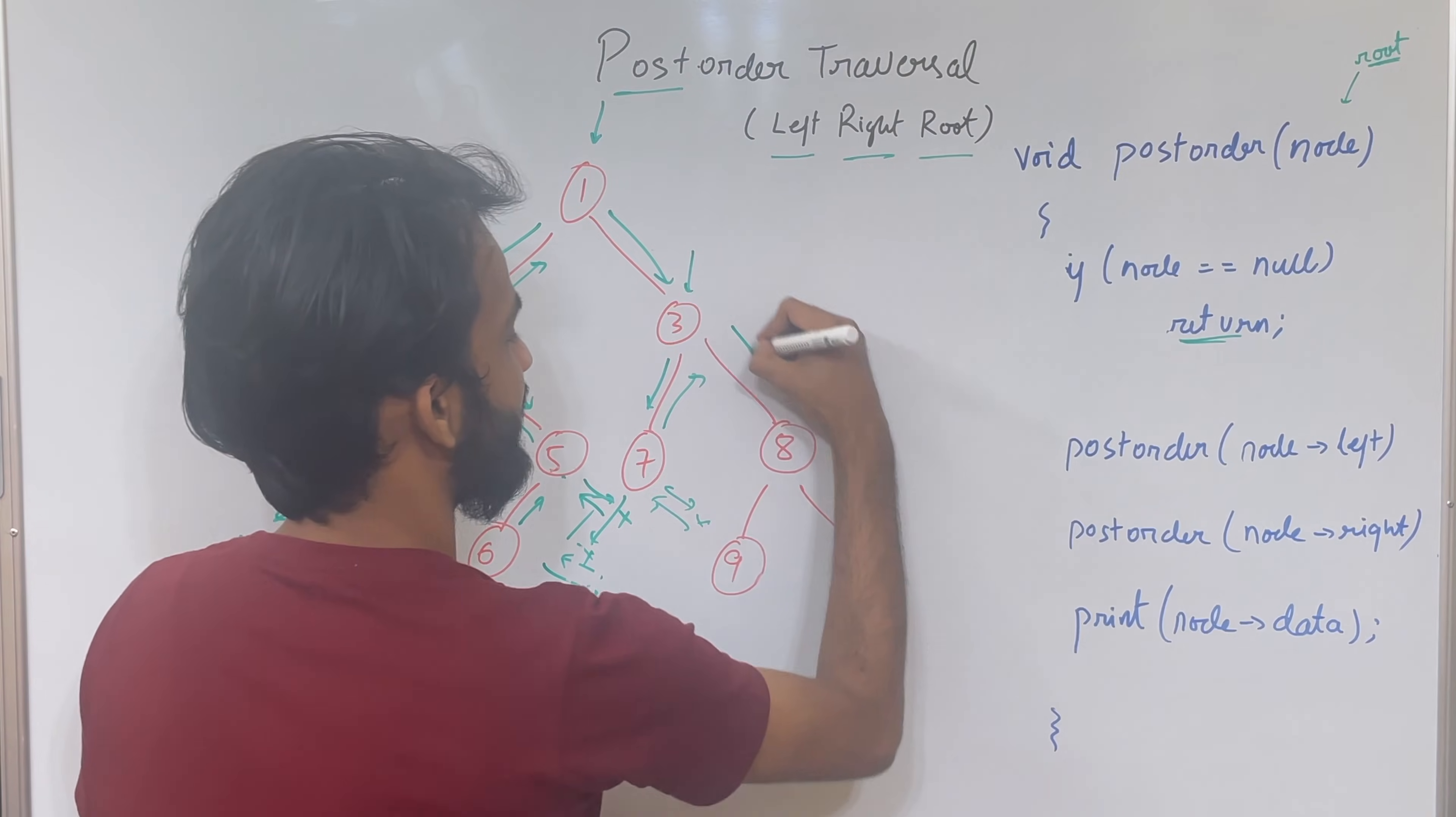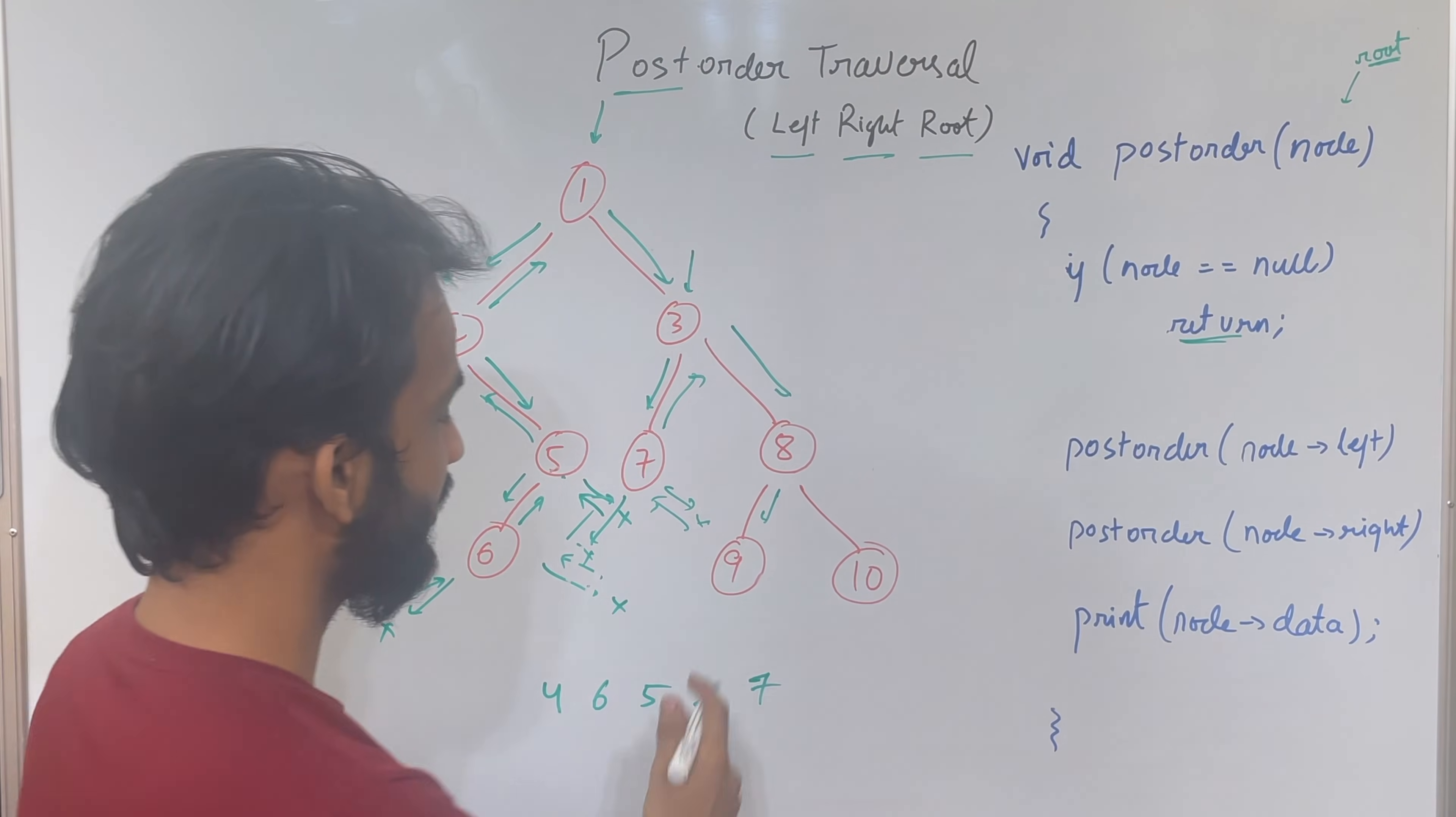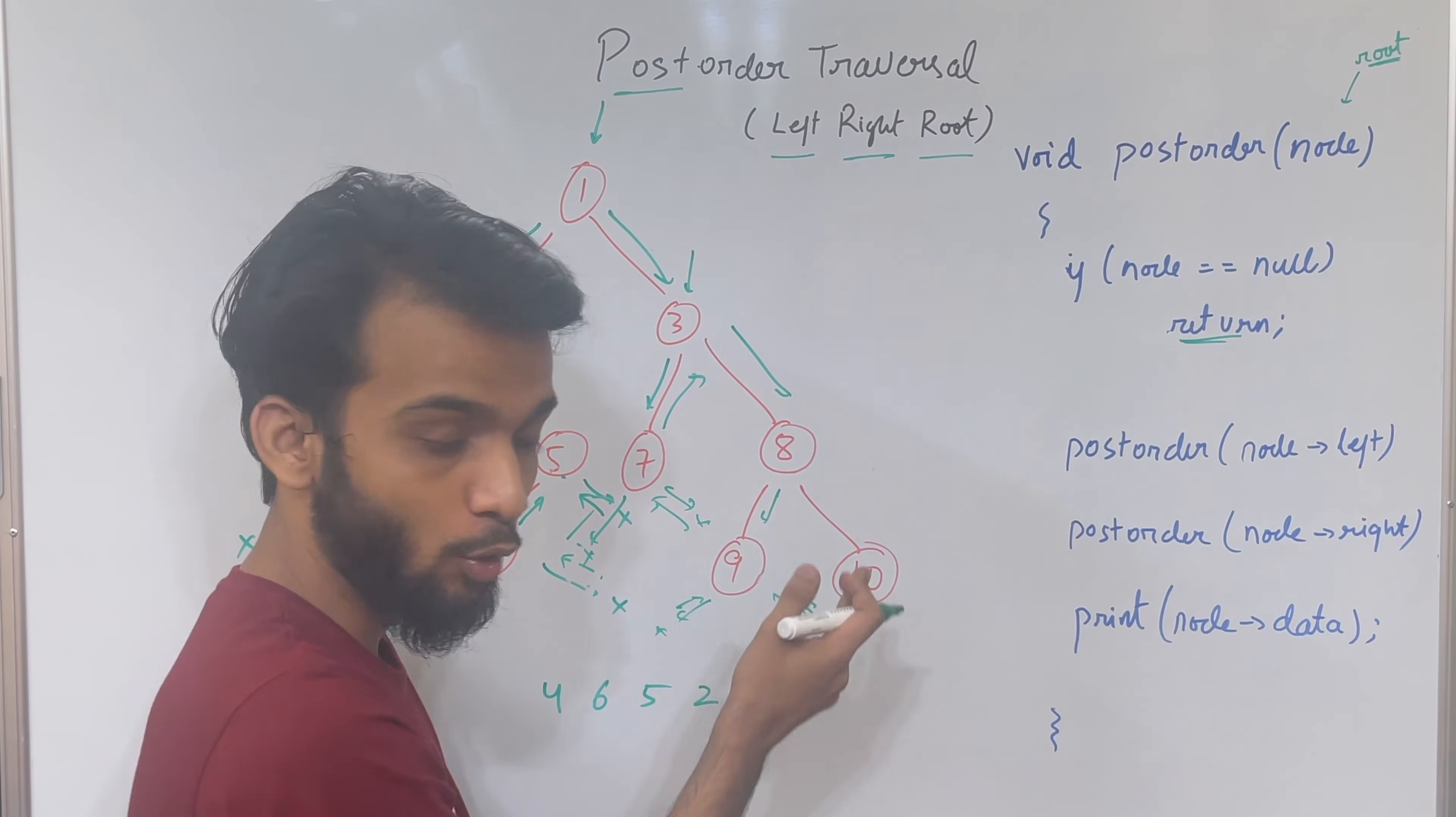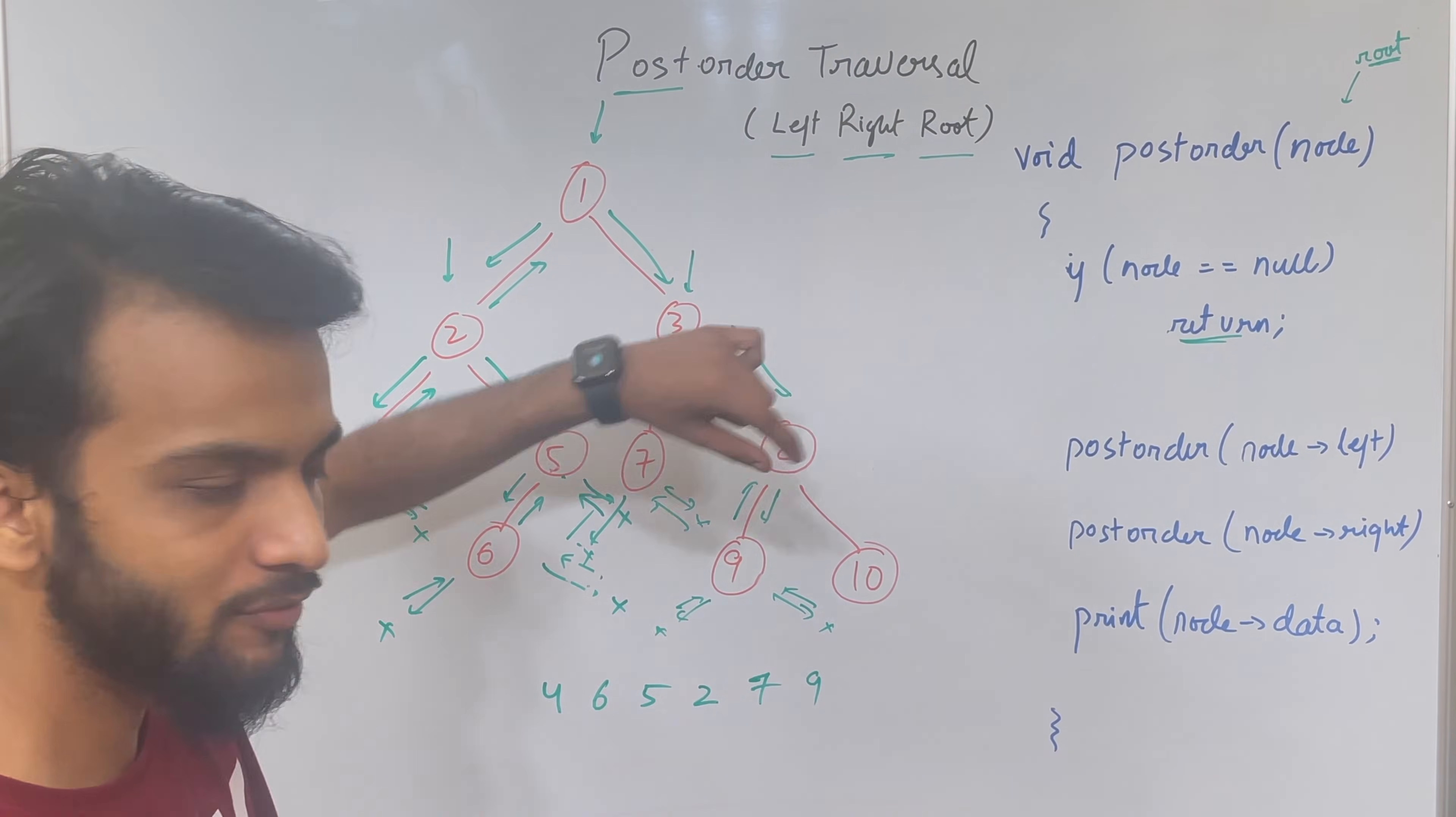Now 3 went to the left, it's time to go to the right. Go to the right, again at 8, go to the left. At 9, go to the left, no one, go back. Go to the right, no one, go back. So 9 says I've gone to the left, I've gone to the right, and I have no one, so it's time to print myself. Printed, and 9 goes back.